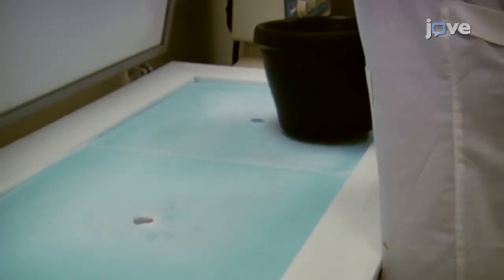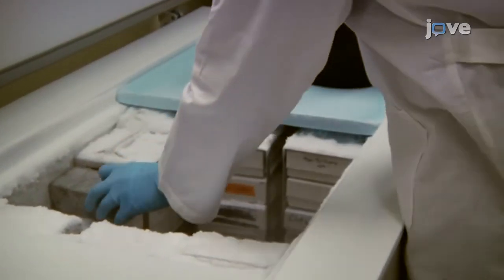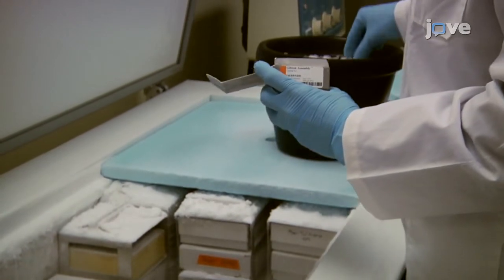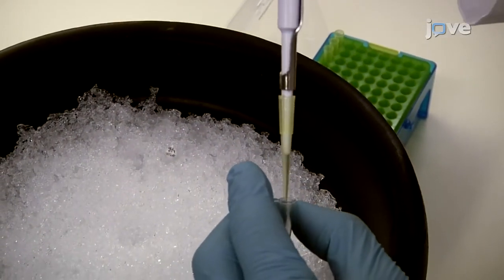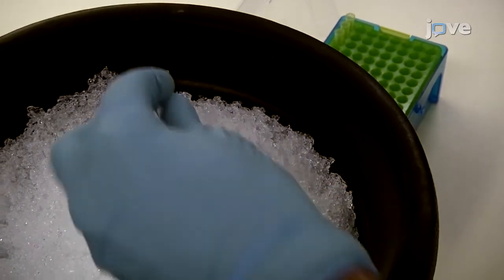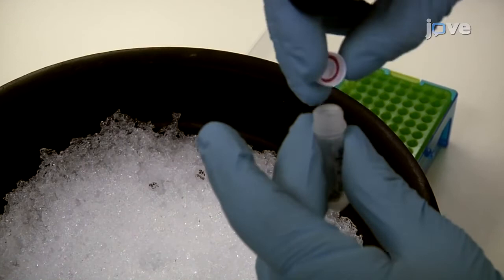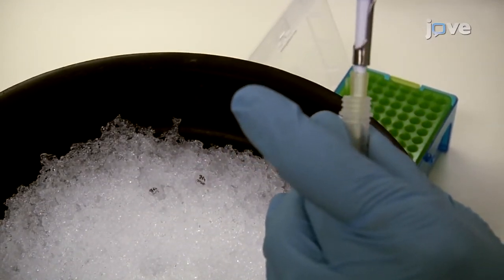Proceed with transformation of the assembly product in competent E. coli or freeze the products at minus 20 degrees Celsius until needed. Follow the transformation procedure that accompanies the chemical or electrocompetent cells. Usually, use 2 microliters of the assembly reaction per transformation reaction.